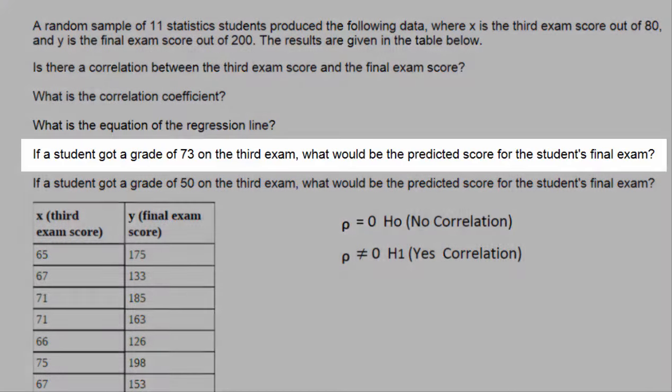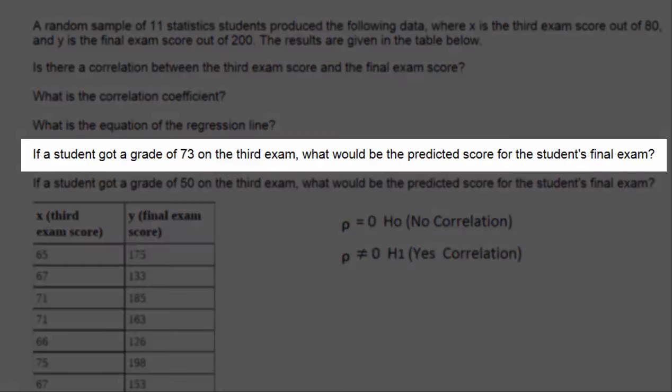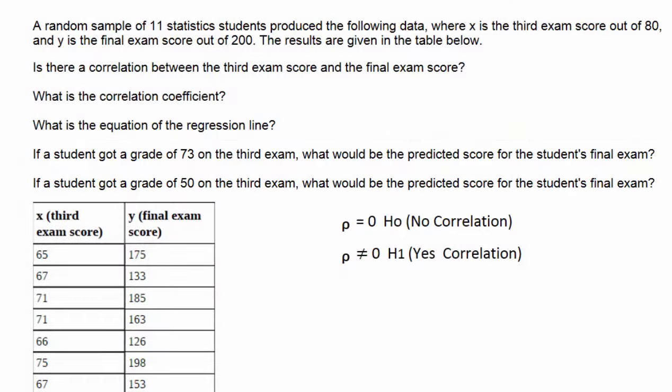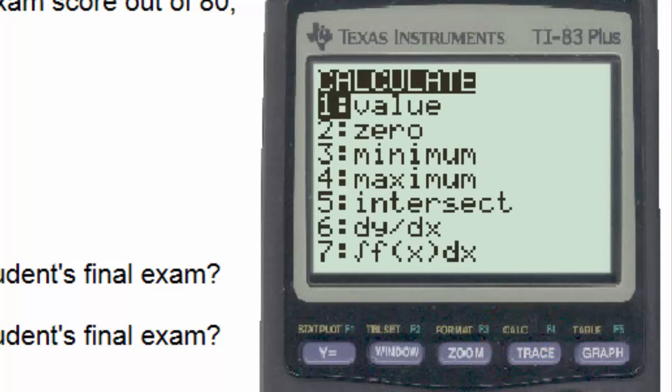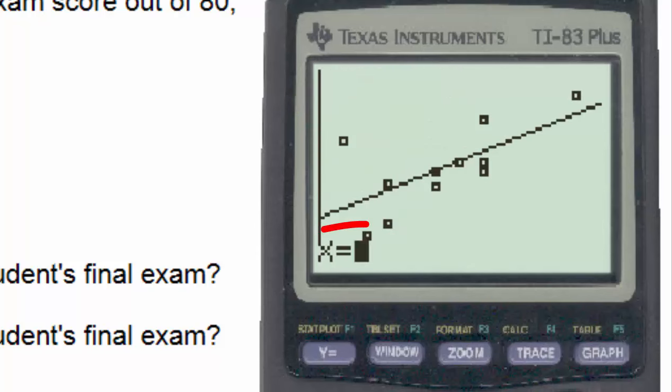The first question asks if a student got a grade of 73 on the third exam, what would be the predicted value of the student's score on the final exam? With the graph being shown on the calculator, a very nice way to do this problem is to use the calculate button, which is immediately above the trace key in yellow. So I'll go to second, then calculate. And we want to calculate a value, so we'll simply hit enter.